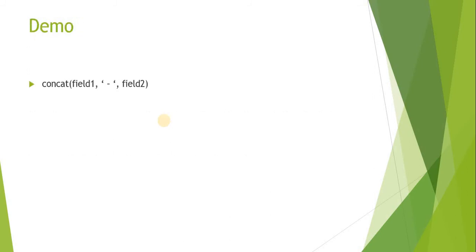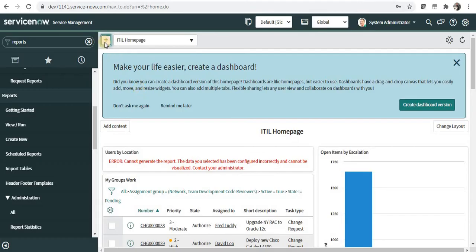The first one is concatenate. As you may be aware, you can concatenate multiple fields and include some strings in between. For example, if you want to display field one, then include a colon or a hyphen, and then display field two.